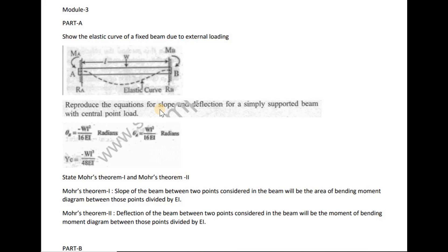The question is to reproduce the equation for slope and deflection for a simply supported beam with a central point load. For a simply supported beam with a central point load, the slope at both ends is WL squared by 16EI, where W is the point load magnitude, L is the span, E is the modulus of elasticity, and I is the moment of inertia.